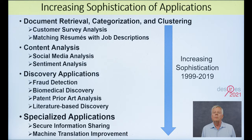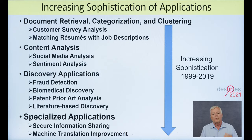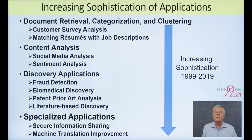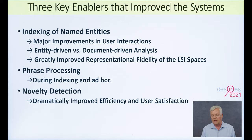Over the years, not only did the systems we built increase in size, but also in sophistication. In the early years we did some very simple things. One of the first systems we built was for comparing resumes with job descriptions — a very simple document-to-document comparison, but it worked very well. Over time, we went to more complex things, working with entities, relationships, events, and complex constructs of user interests and user knowledge. And over time, we were able to do more and more advanced applications, particularly discovery applications like fraud detection and biomedical discovery.